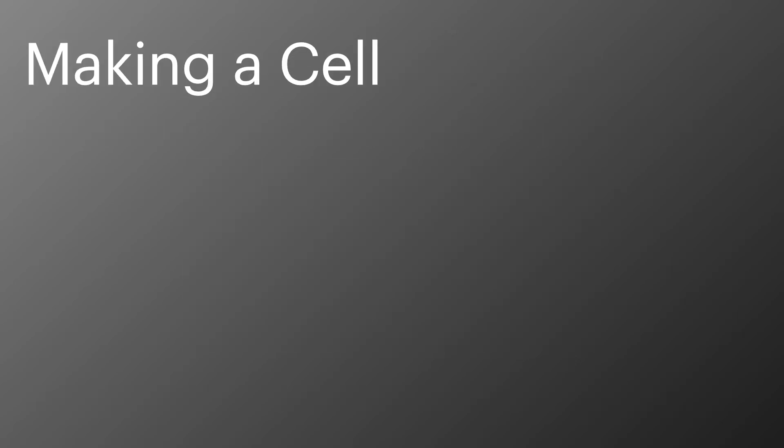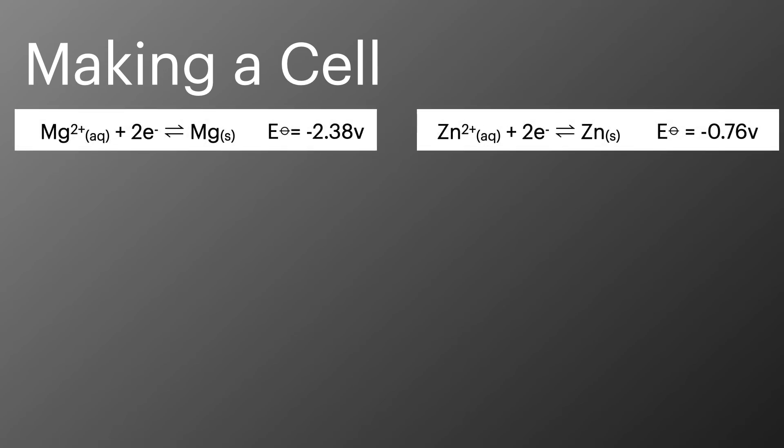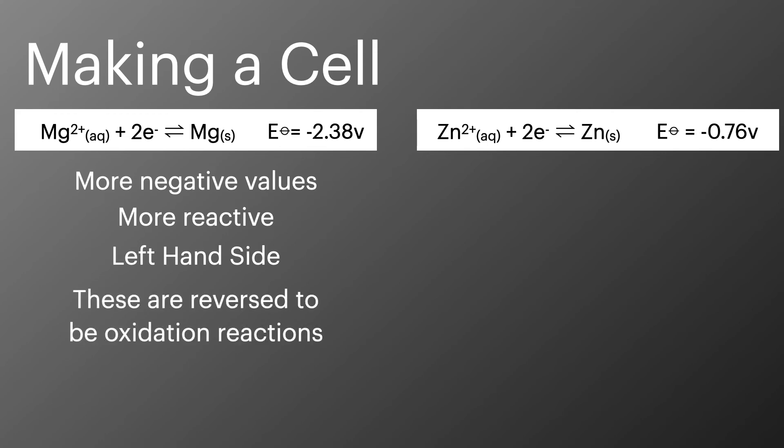So when it comes to putting together a whole cell, then we can look at these two reactions where we've got magnesium and zinc. These are both shown here as their reduction reactions, just like they appear in the electrochemical series. So we'll take the more negative value, and this will be the more reactive metal. And we're going to put this on the left-hand side of our electrochemical cell. Now this needs to be oxidation because they're going to lose their electrons. So we'll reverse this reaction.